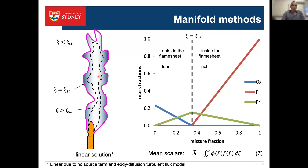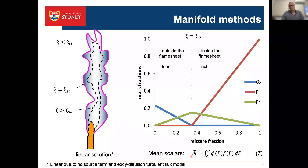At any point in the flow — for example a fuel-rich condition — we look up the corresponding mass fractions from the piecewise linear diagram. To examine statistics such as the mean scalar, we integrate over the mixture fraction convoluted by a probability density function f, whose shape can be presumed using standard functions.